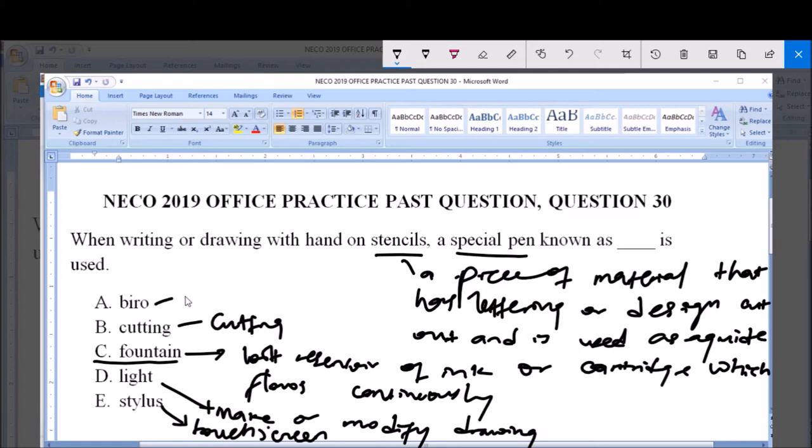And then biro, the common ball pen. Also known as ball pen, it dispenses ink over a metal ball at a point.